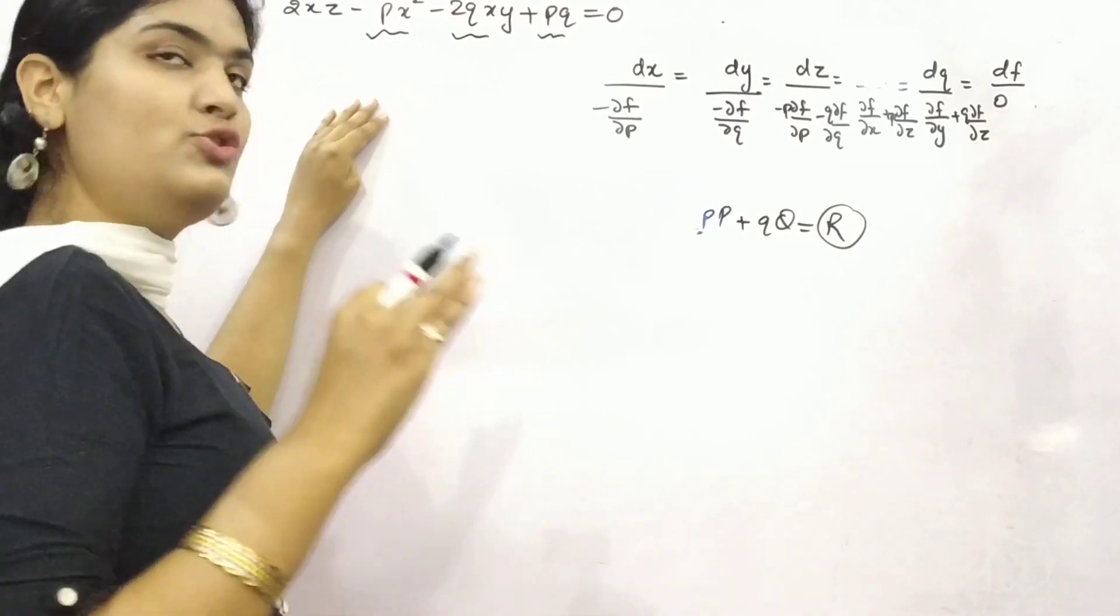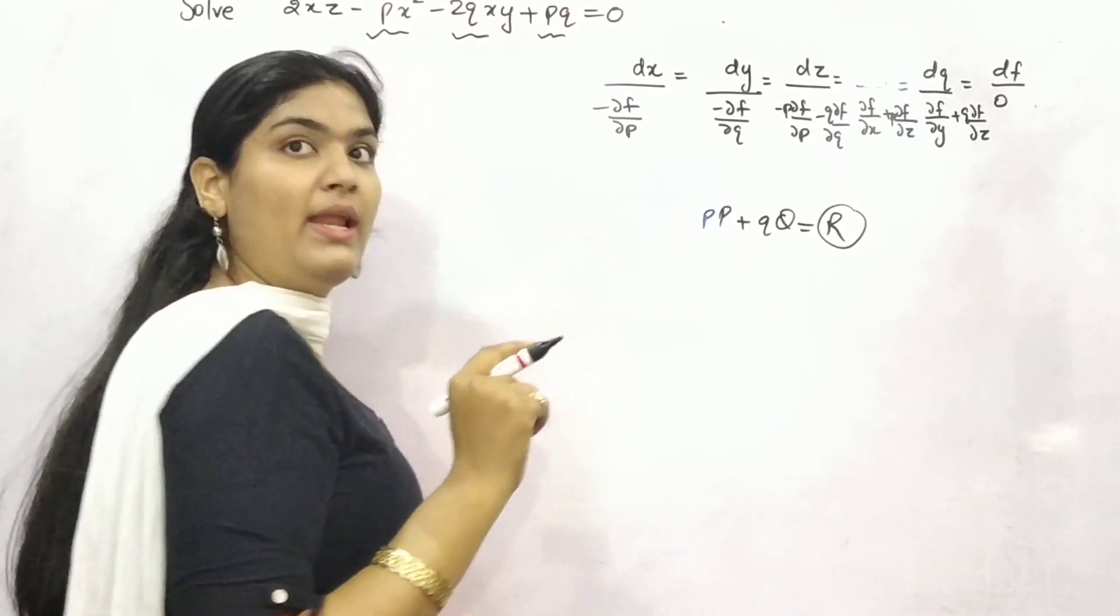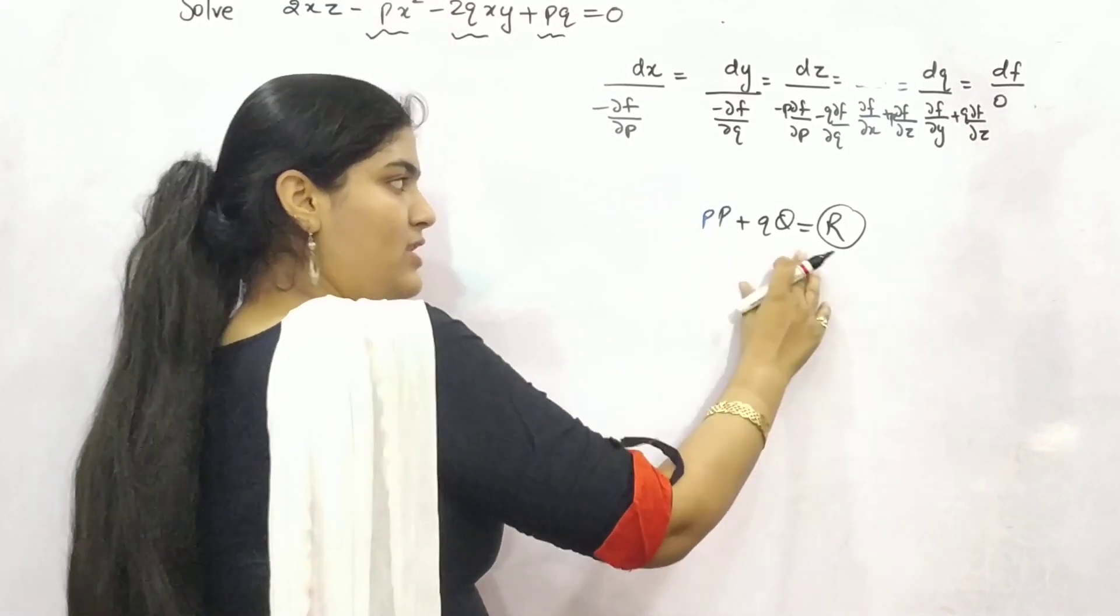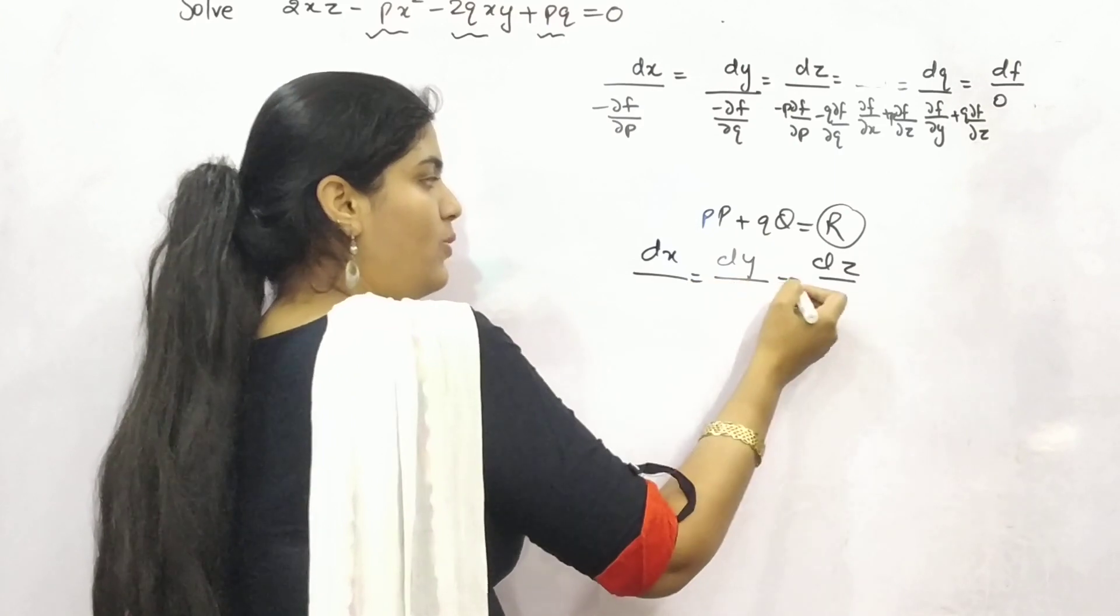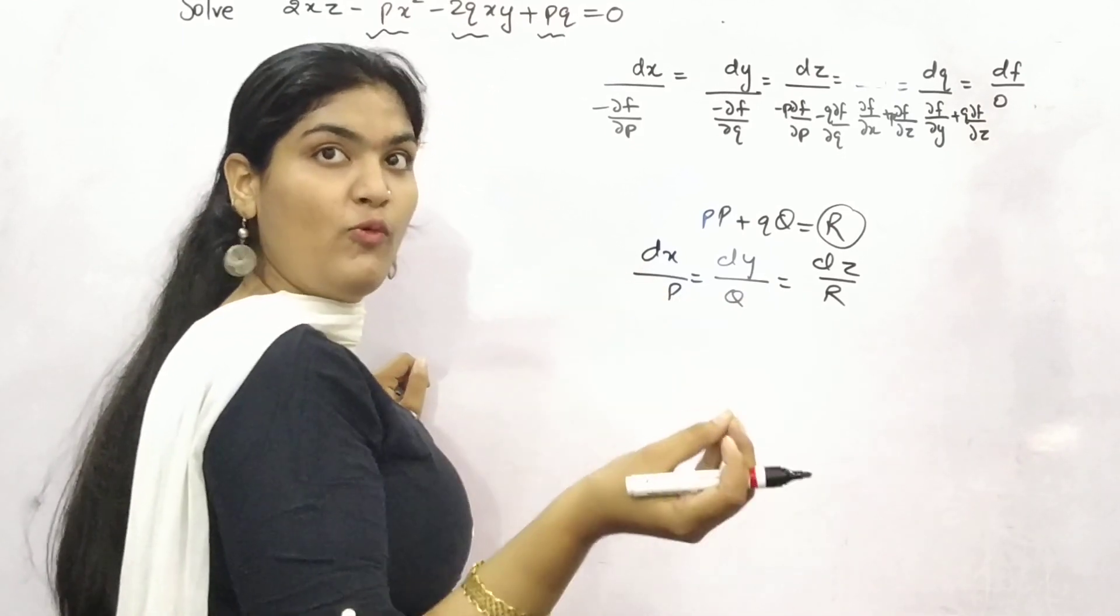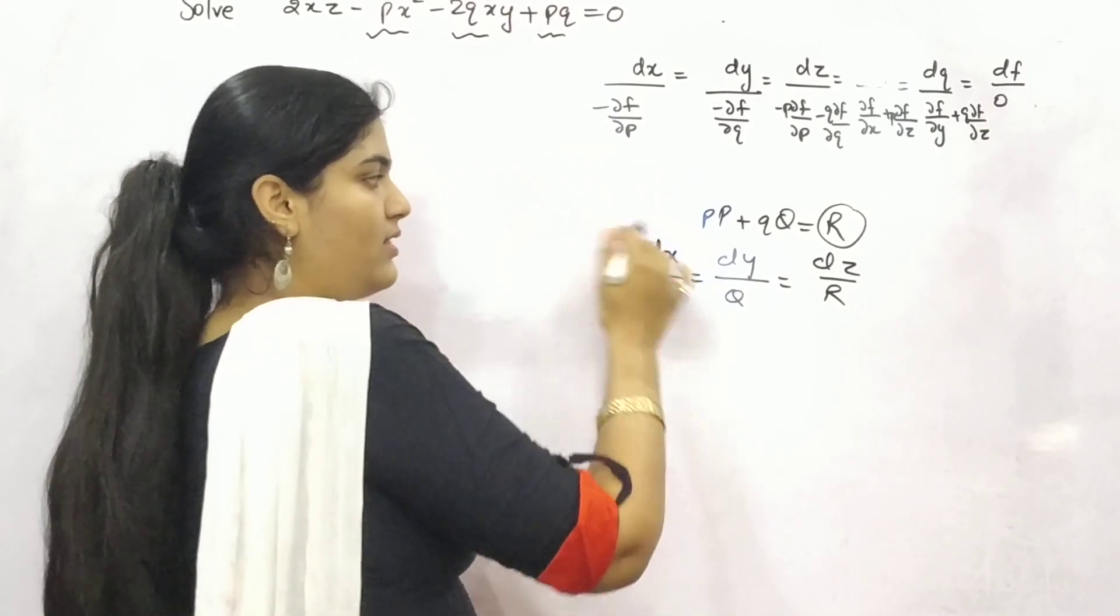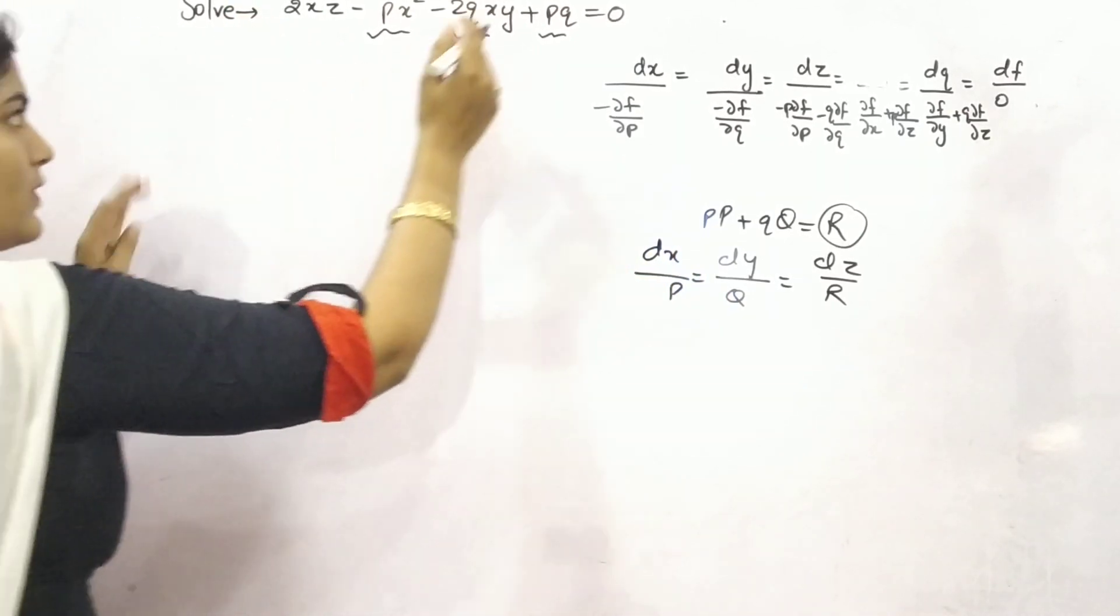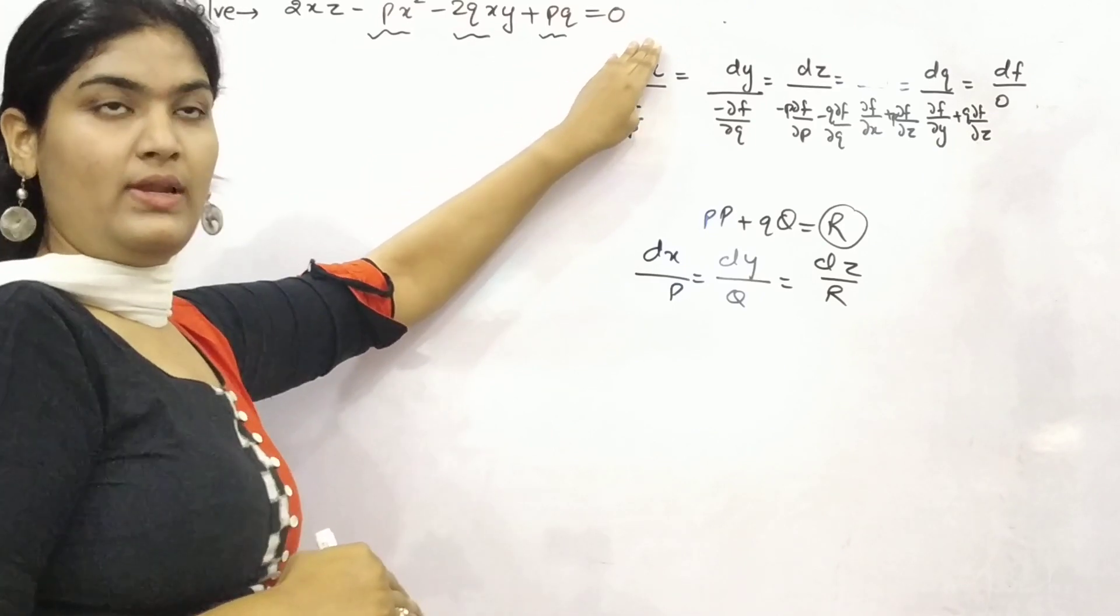But you can see in this equation, even if you want to separate something which doesn't have P and Q in it, then also you will have something which is still in the form of PQ. You cannot get everything all along in the form of variables. So in that case this is a nonlinear equation and you need to follow Charpet's method. So for Charpet's as well you need to follow three steps.